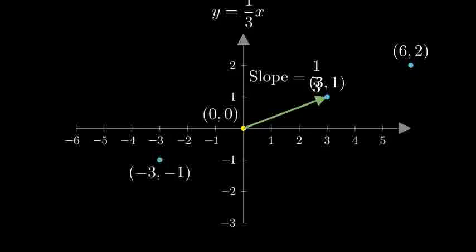Going left three units and down one unit gives us negative three negative one. And going left six units and down two units gives us negative six negative two.